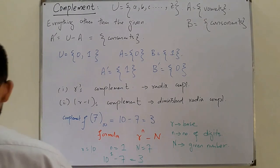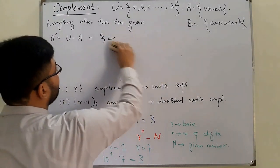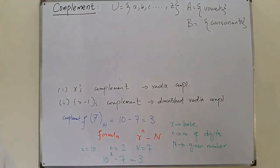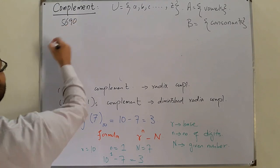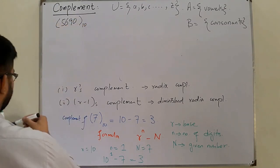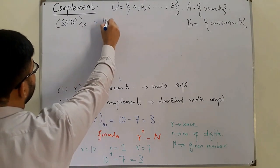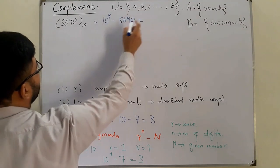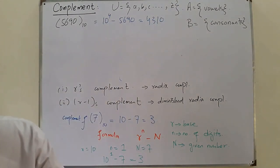Let's say we have another example: the number 5690, in base 10. The number of digits is 4, so we have 10 to the power 4 minus 5690, which gives 4310. So 4310 is the tens complement of 5690.